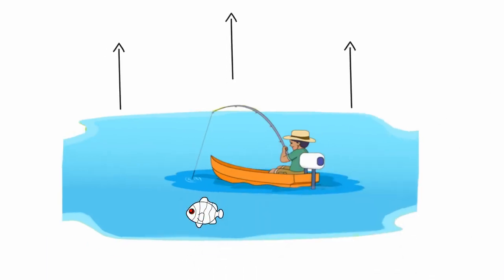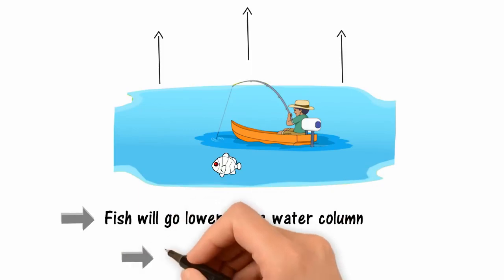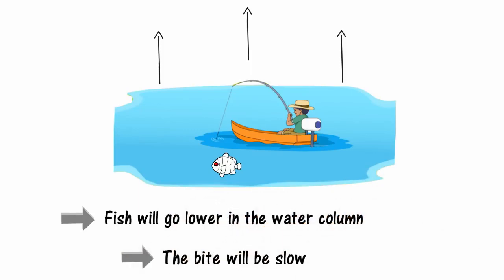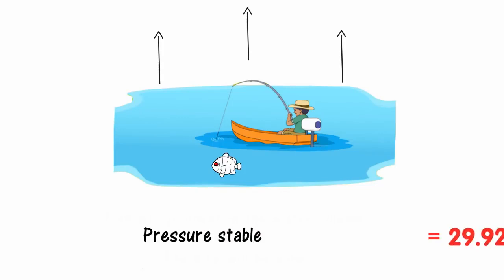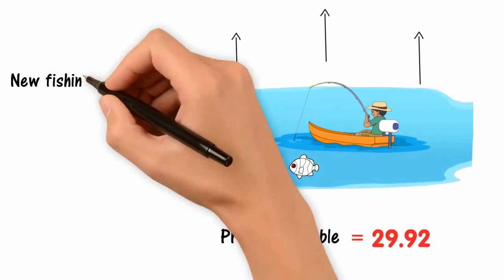Generally, when pressure is low and increasing, fish will go lower in the water column and the bite will be slow - they're gassy and don't want to eat. Pressure that is stable near 29.92 will be average fishing. Try new fishing techniques in these conditions.